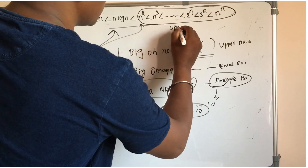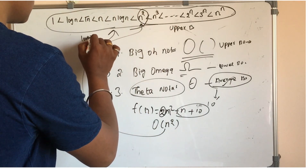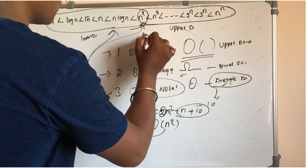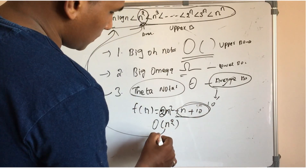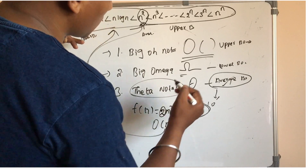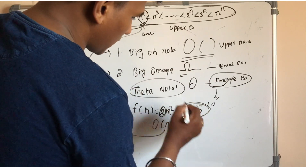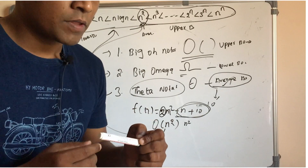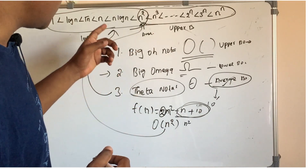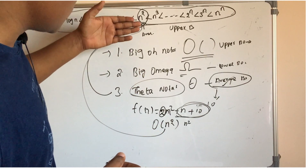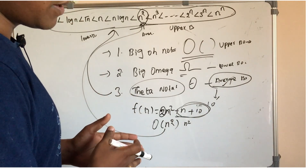If you represent the upper bound and if you have something bigger, the upper bound is the larger bound. If the upper bound and lower bound are the same, in that calculation we will represent the big O notation. This time function will be able to calculate both the upper bound and lower bound.